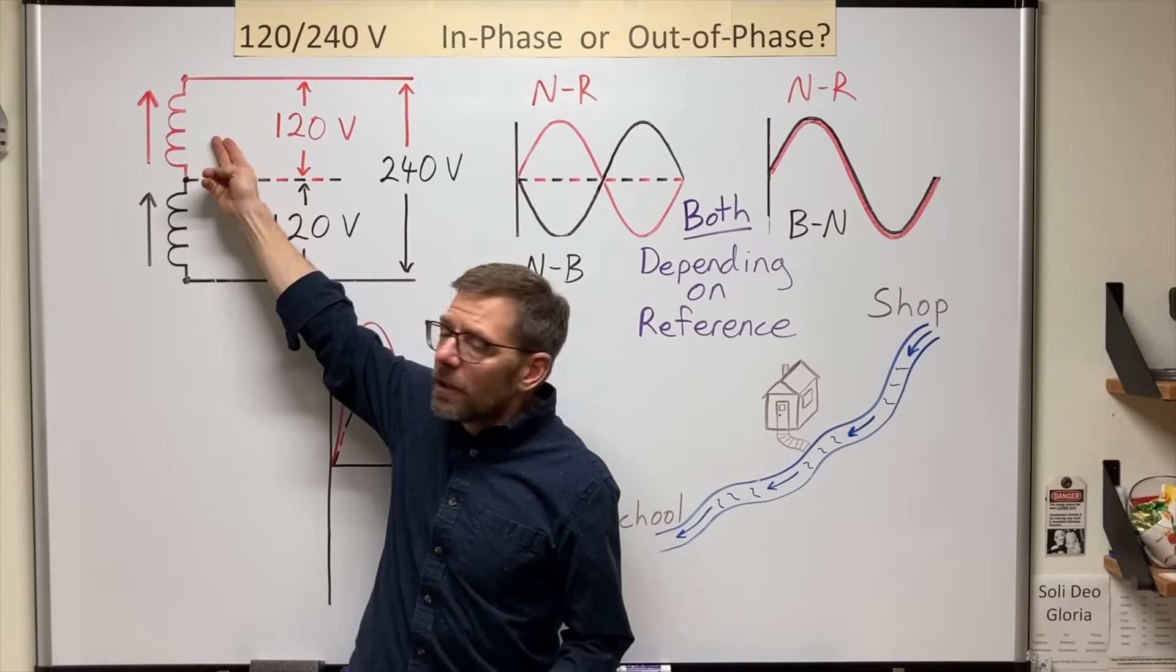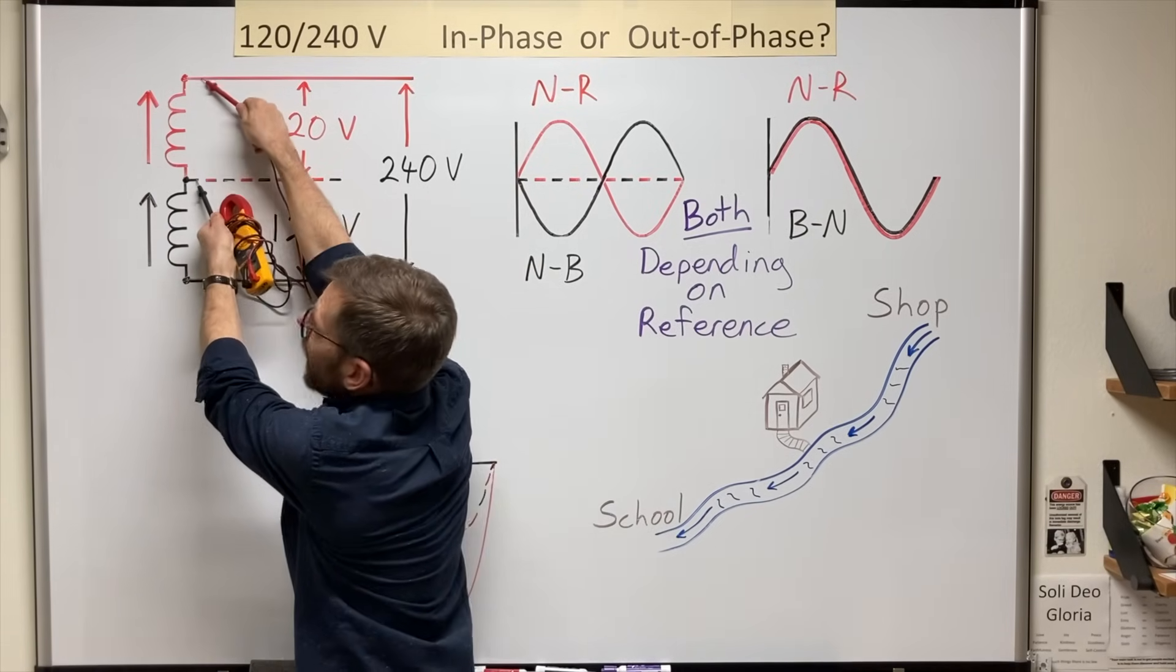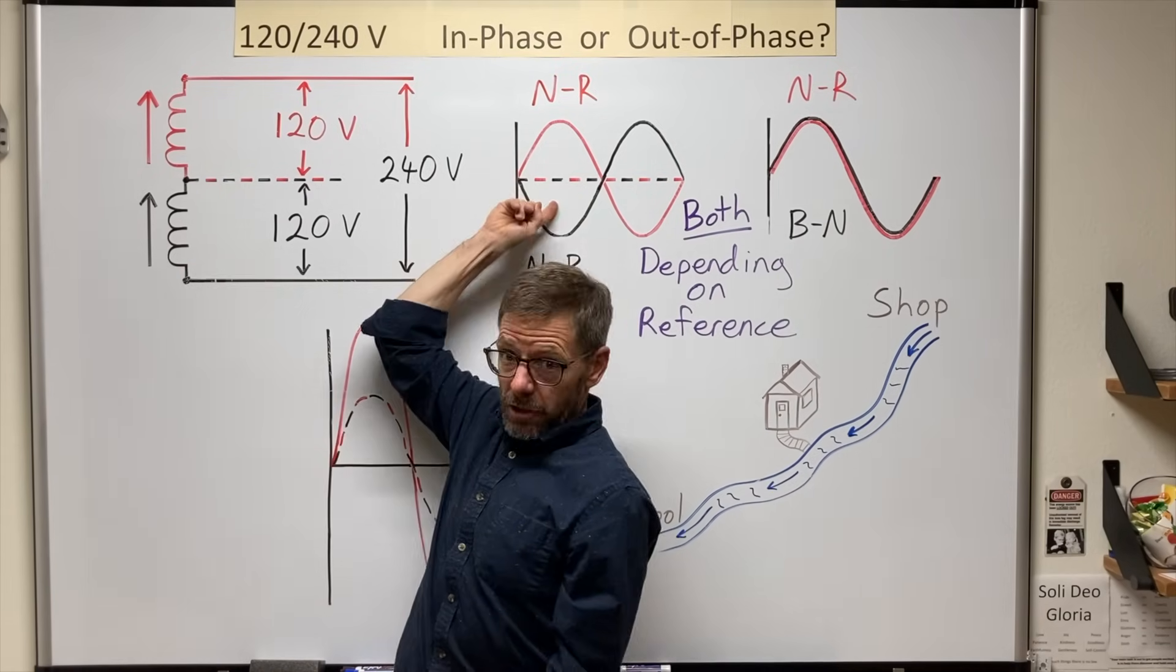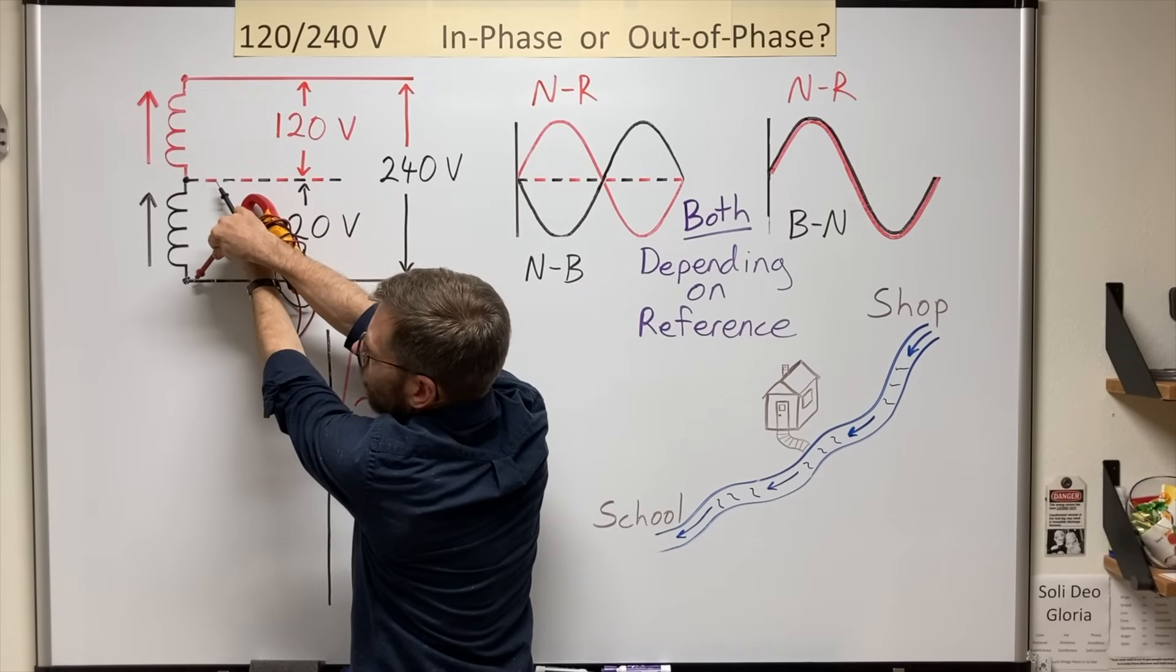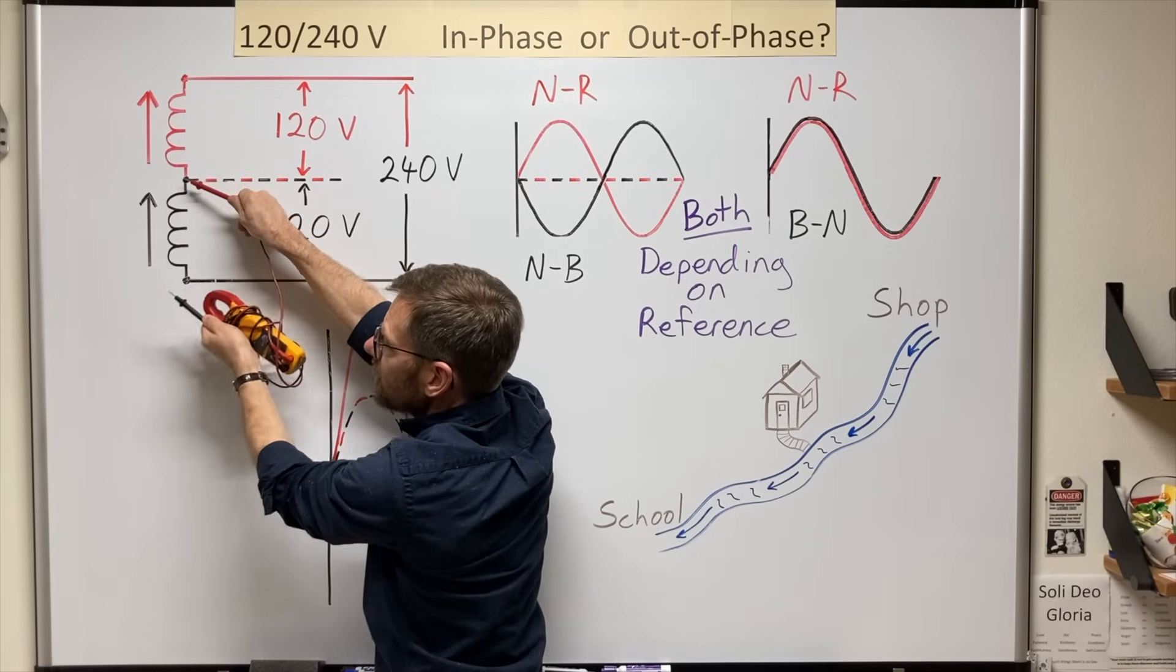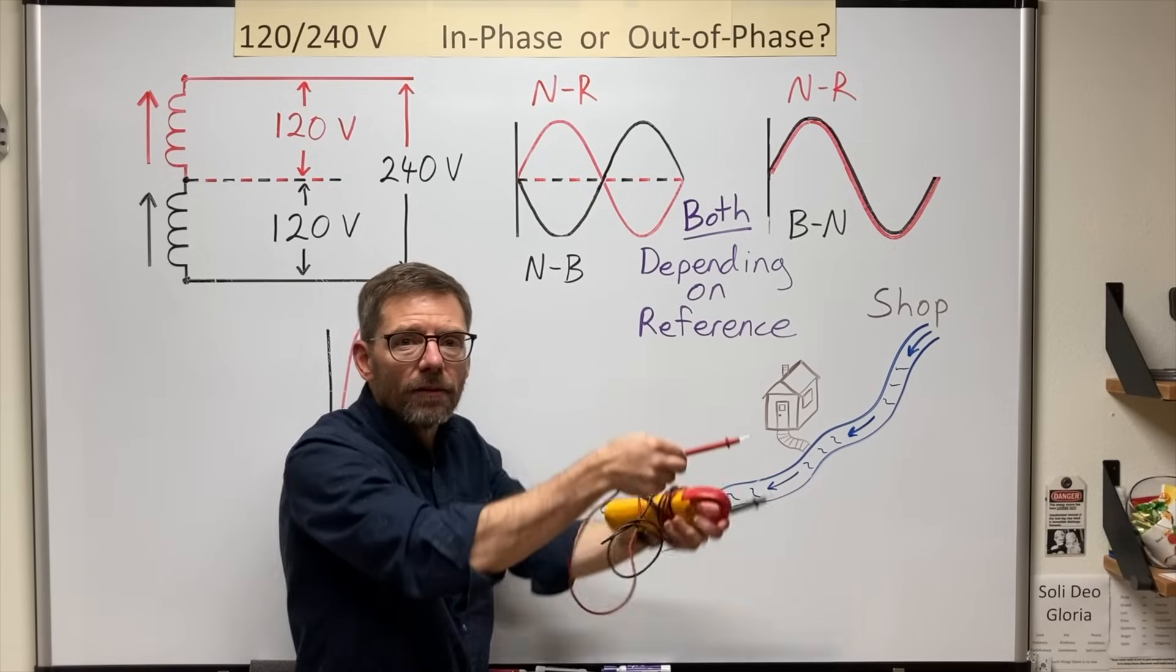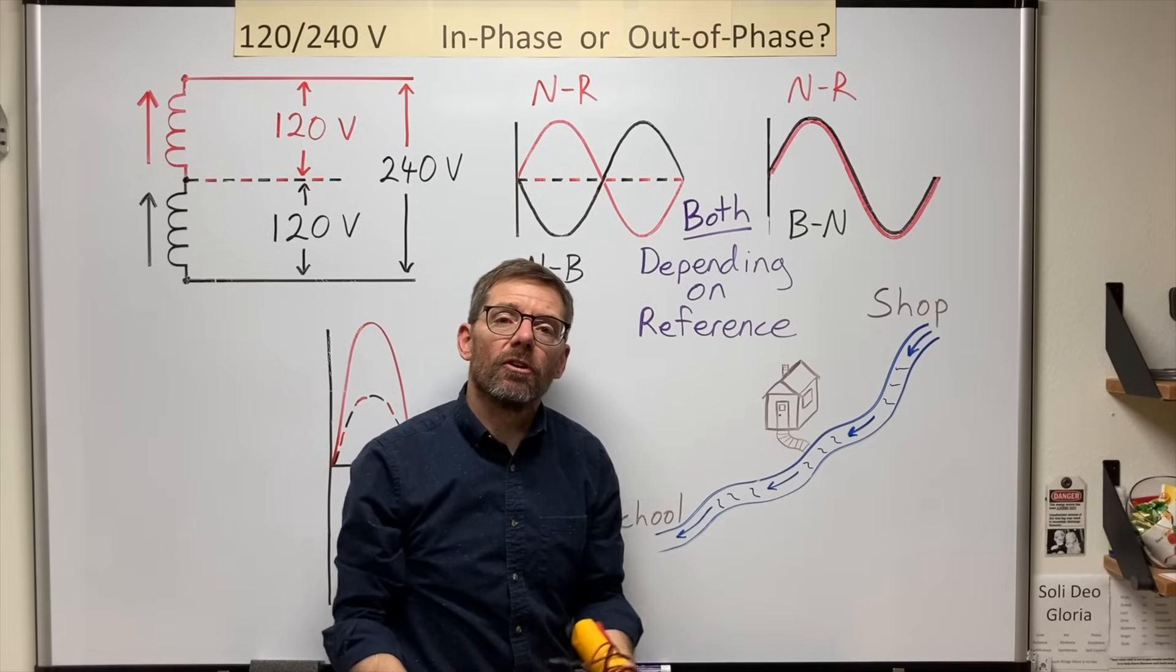The red coil here is measured the same way in both images from neutral to red, neutral to red and neutral to red. But the black coil, that's where the subtlety is. In the first picture here, it's measured from neutral down to the black wire. But in the second picture, the orientation of the leads is changed and it's measured from black up to the neutral. It's that change in the orientation of the leads that flips the black sine wave relative to the red one.